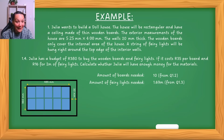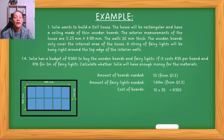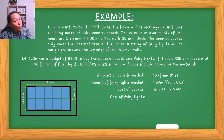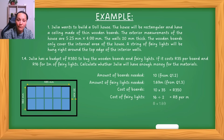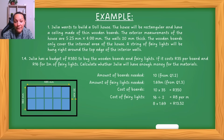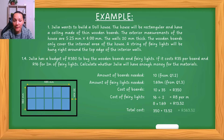We have 10 boards and each board costs 35 Rand, which means the 10 boards together will cost 350 Rand. For the fairy lights, they tell us that for two meters it's 16 Rand. So we first find the price per meter: 16 divided by 2 equals 8 Rand per meter. Now multiply by how much you need — 1.69 meters — and your answer is 13 Rand 52. So the total cost is 350 Rand plus 13 Rand 52, which means she will need to pay 363 Rand 52 for the boards and fairy lights.